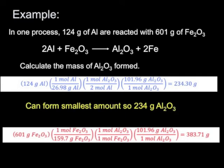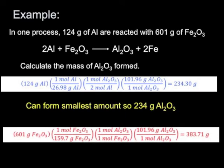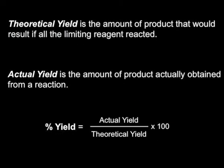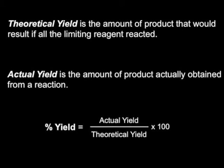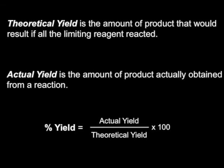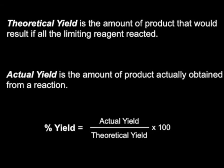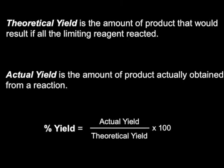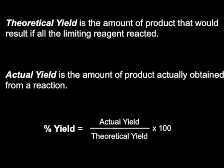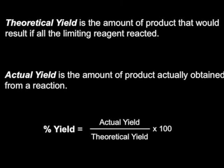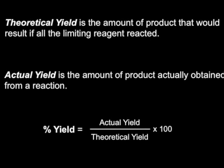The amounts predicted using this limiting reagent calculation are called the theoretical yield — the amount of product that would result if all of the limiting reagent were consumed. When we actually carry out the reaction in the laboratory, the amount we obtain is the actual yield. The percent yield is the relationship between the two: percent yield = (actual yield / theoretical yield) × 100.